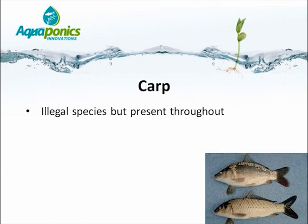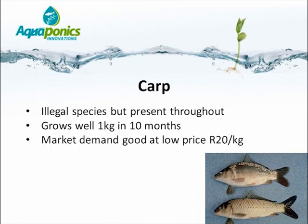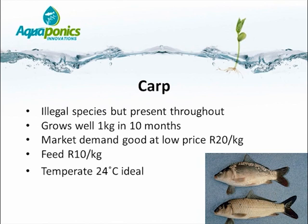Carp is currently an illegal species within South Africa, though it is present throughout the country, so the real environmental risk is low. It grows well, attaining 1 kg in about 10 months. Market demand is fair at a low price — around 20 rand per kilo or less. Given a feed cost of about 10 rand per kg and the principle that market price should be about 3 times feed cost, there is very little scope for profit. The real advantage of carp is their fairly moderate optimal temperature of 24 degrees Celsius, making them a good match for plant crops requiring lower temperatures than tilapia prefers.